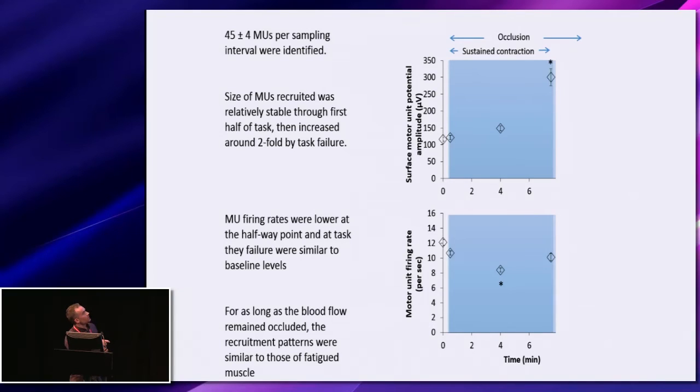If we look just at the top figure for now, this represents the size of the recruited motor units. Throughout the first half, there's not very much change. The size of the motor units are pretty much stable. By task failure, the motor units that were recruited seem to be about up to three-fold greater. So there's, towards the end, a progressive increase in motor unit recruitment and recruitment of those larger motor units. And this is pretty much a maximum effort at the end.